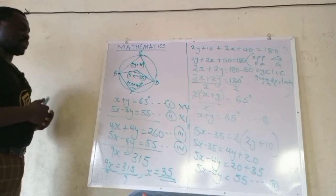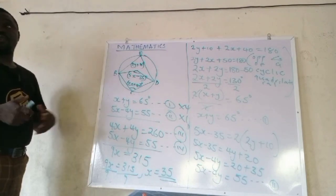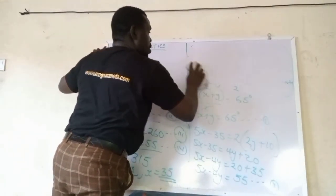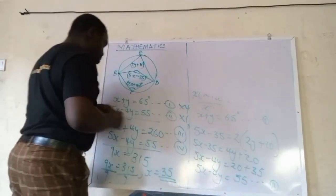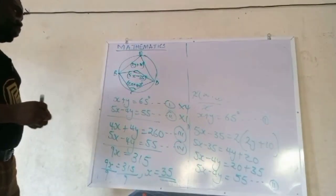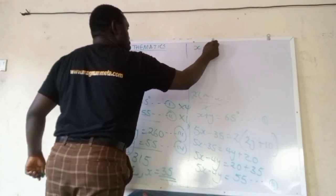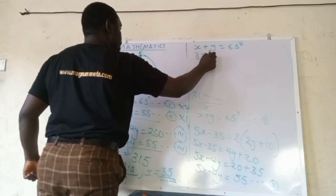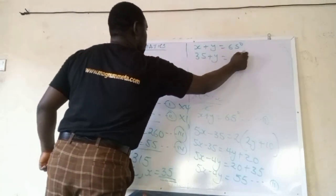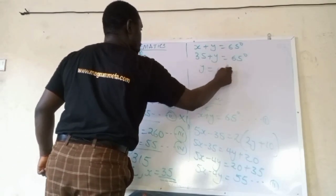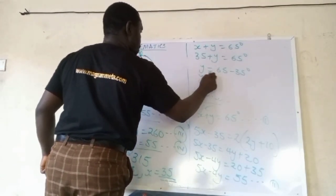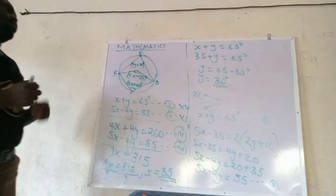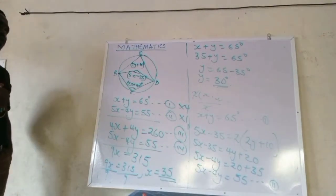x is 35, we can easily get our y. Having gotten x, how do we get that? Substitute the value of x in one of the equations. So we have equation 1, x plus y equals to 65. Already we have gotten our x to be 35, so y equals to this minus this. So y is equals to 30 degrees.